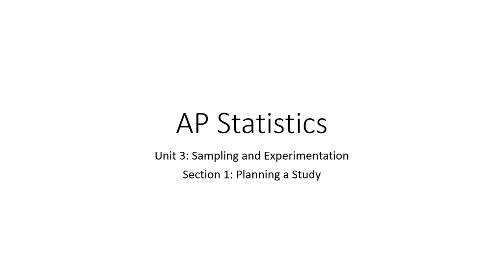Alright, so we're going to be looking at AP Statistics, moving on to Unit 3. We're going to be looking at sampling in this whole unit and different ways of doing different samples. We're going to start off by looking at setting up and planning out a study and looking at different ways that you can collect this data.